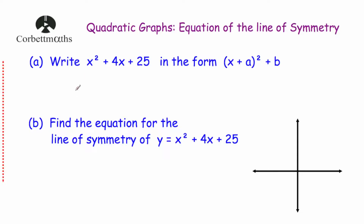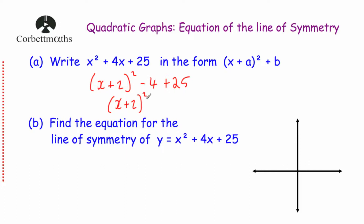Let's look at our first question using completing the square to find the line of symmetry. Part a says: write x squared plus 4x plus 25 in the form (x + a)² + b. We open brackets and write x plus half of 4, which is 2, close bracket squared. Then we subtract 2 squared which is 4, and put plus 25 on the end. Simplifying: minus 4 plus 25 is plus 21. So x squared plus 4x plus 25 equals (x + 2)² + 21.